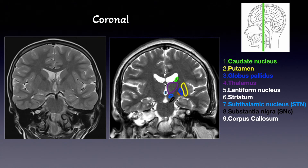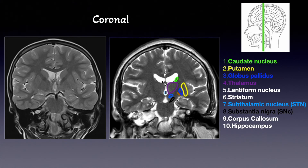Additionally, we can see here again the corpus callosum, which is a fibrous band that connects the two hemispheres together. And here I want to show you one structure that we can see: the hippocampus, which is responsible for our memory. Additionally, we can see here the lateral ventricles and the third ventricle. The lateral ventricle is connected to the third ventricle with the foramen of Monro, or interventricular foramen, which connects the two ventricles with each other.